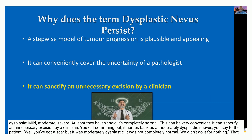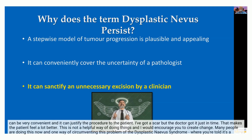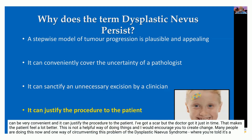You cut something out, it comes back as a moderately dysplastic nevus, and you can say to the patient, 'Well, you've got a scar, but it wasn't completely normal — we didn't do it for nothing.' That can be very convenient. And it can justify the procedure to the patient: 'I've got a scar, but doctor got it just in time.' That makes the patient feel a lot better.